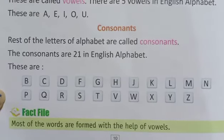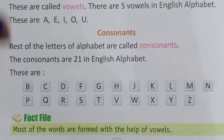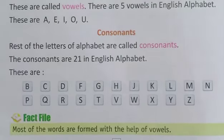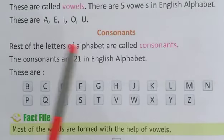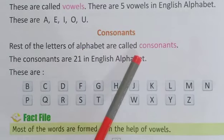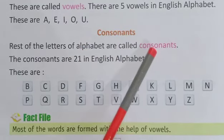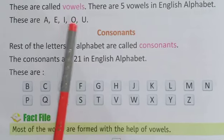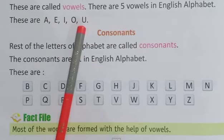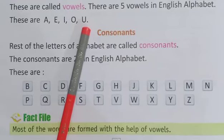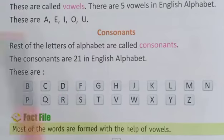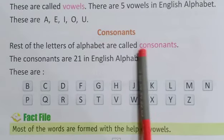Now, consonants. What are consonants? Consonants kya hote hain? Rest of the letters of the alphabet are called consonants. Vowels matlab A, E, I, O, U ke baad, jo alphabets mein se jo letters bachte hain, woh sabhi consonants kehlate hain.